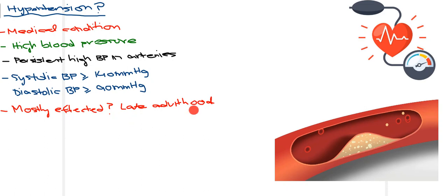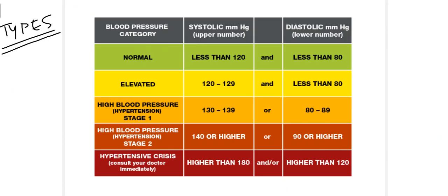The population most commonly affected by hypertension is late adulthood, but during recent times any age group can be affected. There are different types of hypertension categorized by the American Heart Association. Normal blood pressure is systolic less than 120 and diastolic less than 80. The elevated or pre-hypertensive phase is when the systolic ranges from 120 to 129 and diastolic is still less than 80.